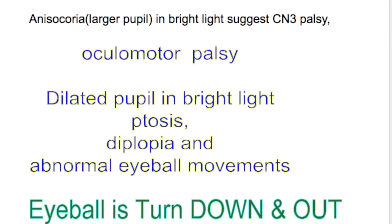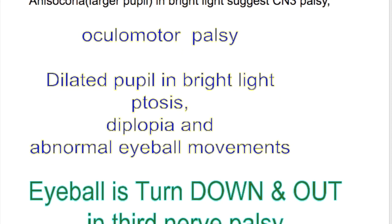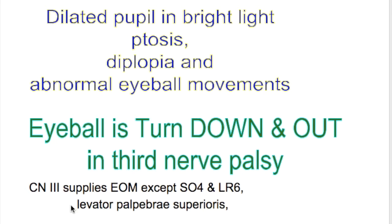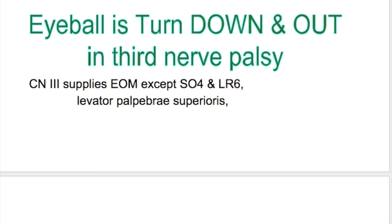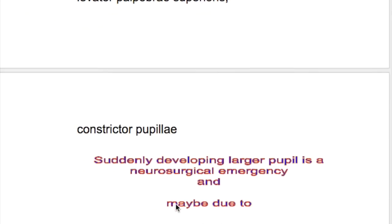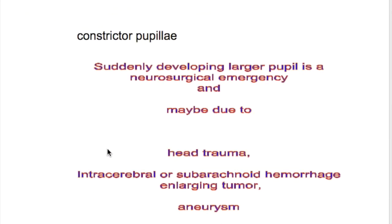In third nerve palsy, the eyeball is turned down and out, because the oculomotor nerve supplies the extraocular muscles except for the superior oblique, which is supplied by the trochlear nerve, and the lateral rectus, which is supplied by the abducens nerve. It also supplies the levator palpebrae superioris and the constrictor pupillary muscles.